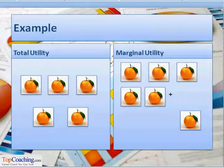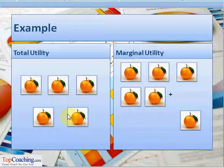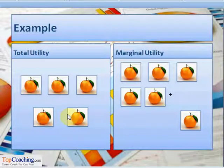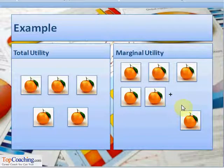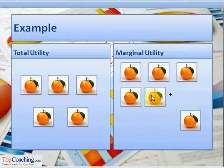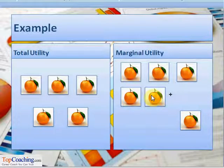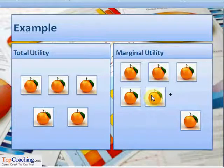Let us take an example to clarify these terms. If a person eats five oranges at a time, the sum of the utilities of all five oranges consumed will be the total utility for that person. This should be contrasted with marginal utility: the additional satisfaction obtained on eating the sixth orange after eating all five will be the marginal utility, as it is derived from the consumption of one additional unit of the commodity.